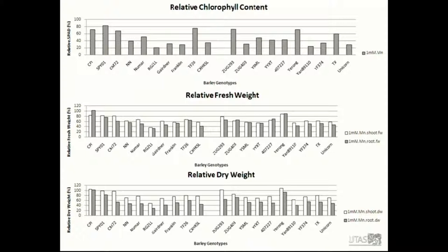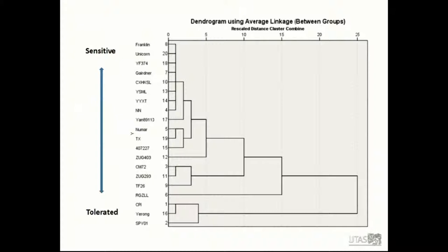Also, TF-26 and Yerong also showed evidence of tolerance compared with other genotypes. This cluster combined SPI-01 values and biomass including dry weight and fresh weight of shoot and root. Genotypes in the cluster show different tolerance to manganese toxicity. As a result, we can select the most contrasting genotypes as parents for following experiments like QTL mapping, such as CM-72 and Gardiner, Yerong and Franklin.